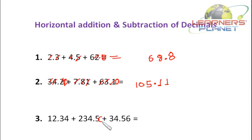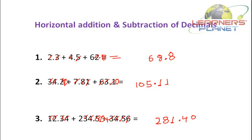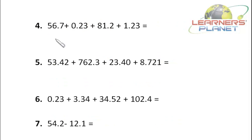The next problem is 12.34 plus 234-point-something. I write a zero to make the digits even. It's 4 plus 0 is 4, plus 6 is 10 — write 0, carry 1. Then 1 plus 3 is 4, plus 5 is 9, plus 5 is 14 — write 4, carry 1. I put a decimal. Then 1 plus 2 is 3, plus 4 is 7, plus 4 is 11 — write 1, carry 1. Then 1 plus 1 is 2, plus 3 is 5, plus 3 is 8, and 2 remains. The final answer is 281.40.